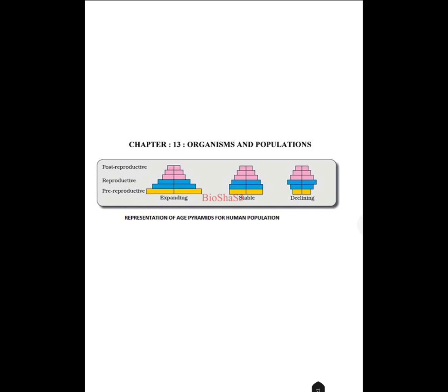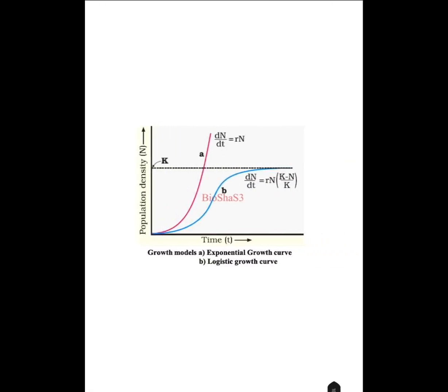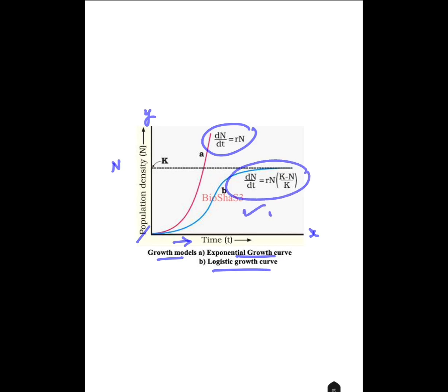From Chapter 13, Organisms and Population: the representation of age pyramids for human population — whether the pyramid is expanding, stable, or declining. Whether the pre-reproductive phase is more, reproductive phase is more, or post-reproductive phase is more determines whether it is expanding, stable, or declining. Then the growth models — the exponential growth curve and logistic growth curve — this graph itself is asked as a direct question. On the x-axis show time, on the y-axis show population density (N). Mention the equations: dN/dt = rN for exponential growth, and dN/dt = rN × (K − N)/K for logistic growth.